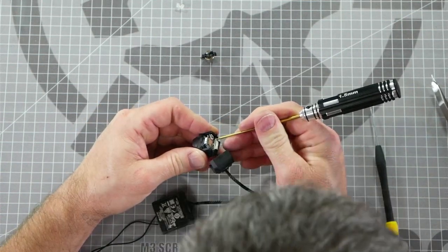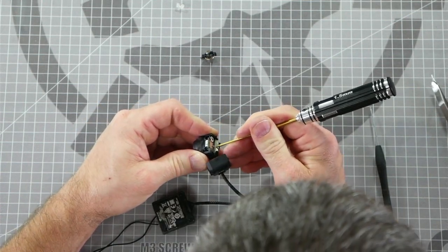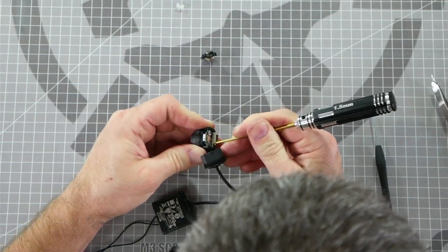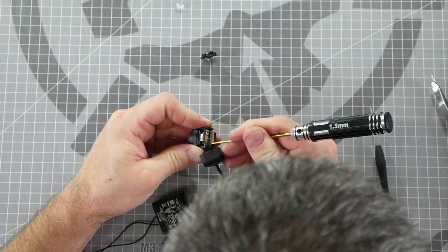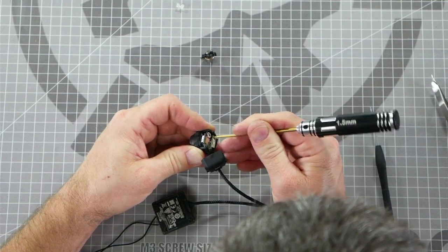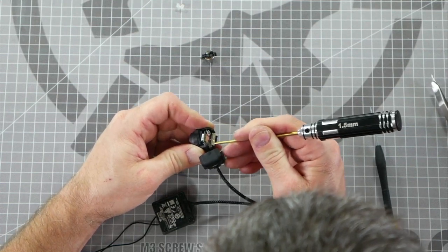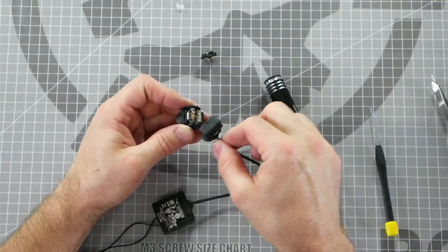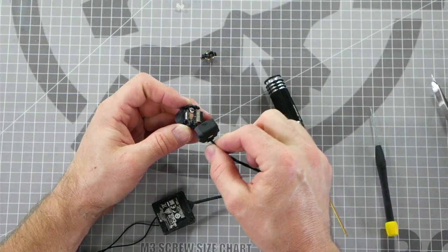Once you're sure that you have it lined up properly you can use your two millimeter hex driver to gently press on it to make sure that it's properly seated in its channel. Be very careful when doing this because it's very easy to damage this sensitive cable. Now I can tell that it's locked in place because when I pull on it it doesn't pop back out.